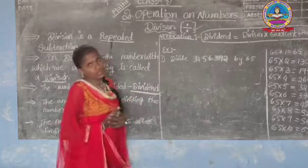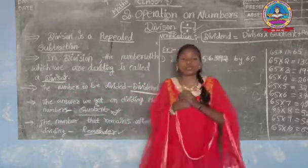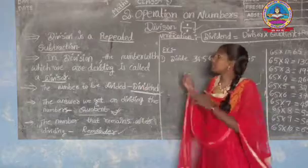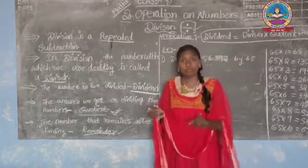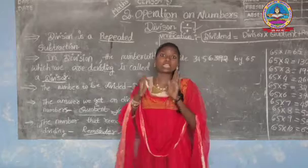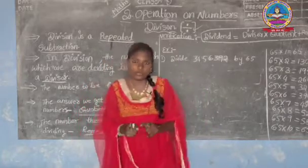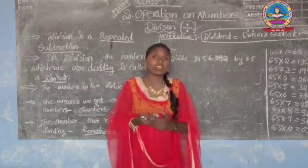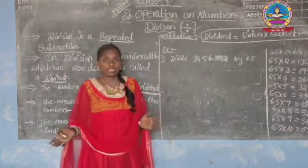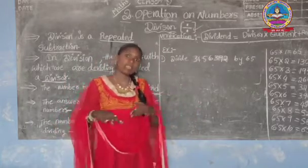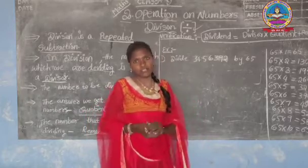Now let us see the examples. Division is also used to find out the cost of one thing or object — the cost of one object when the cost of many bags, many things, or many objects is given.